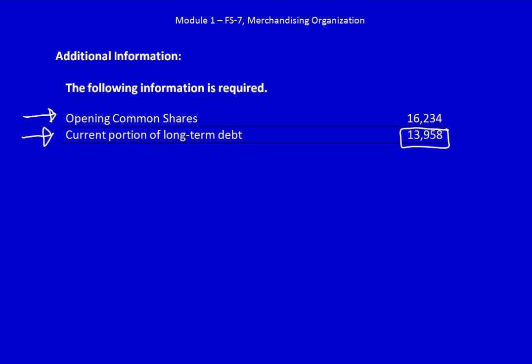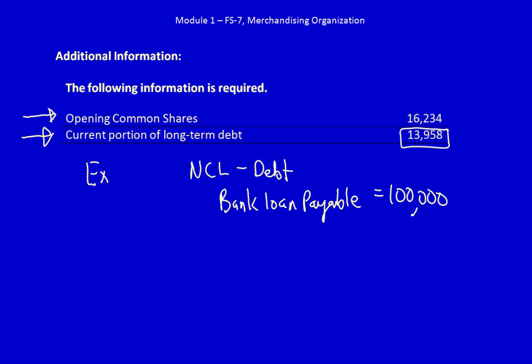Let's give an example. Let's say that a company has a non-current liability — a bank loan payable of $100,000. However, a portion of that bank loan is going to be paid in the next 12 months. That means the portion of the bank loan that will be paid within the next 12 months is actually a current liability, because it is due and will be settled within the upcoming 12 months. So the bank loan payable has to be divided: the current portion is the amount paid within the upcoming 12 months — let's assume $1,000 a month, so the current portion will be $12,000.